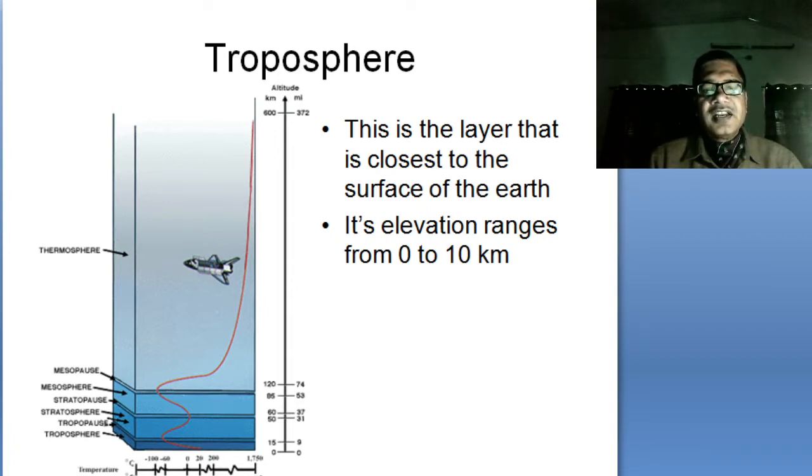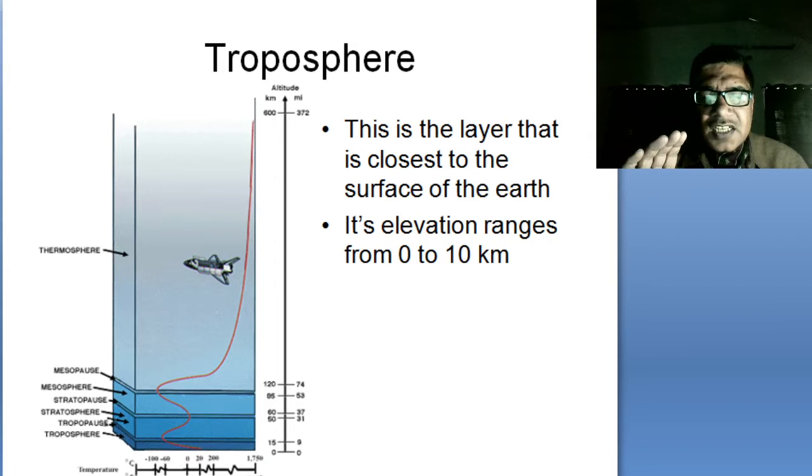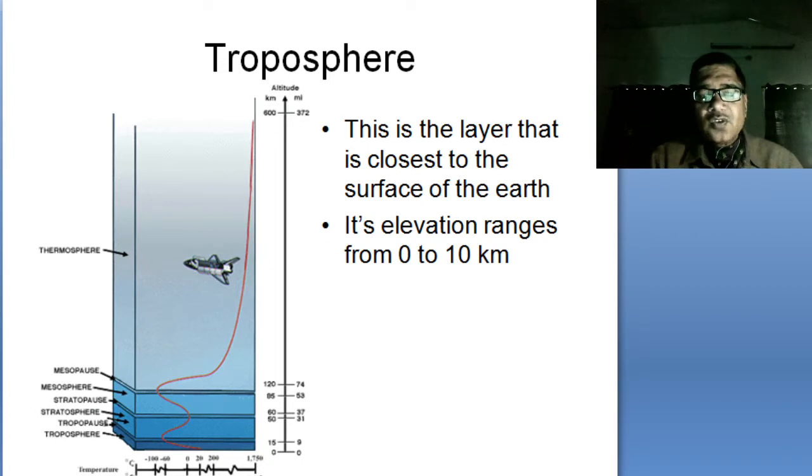The layer nearest to the earth's surface is known as troposphere. The height of this layer ranges from 0 to 10 kilometers. At the polar areas this layer is comparatively thinner and compressed but at the equator you find that the troposphere is a very wide layer, almost up to 8 to 10 kilometers.